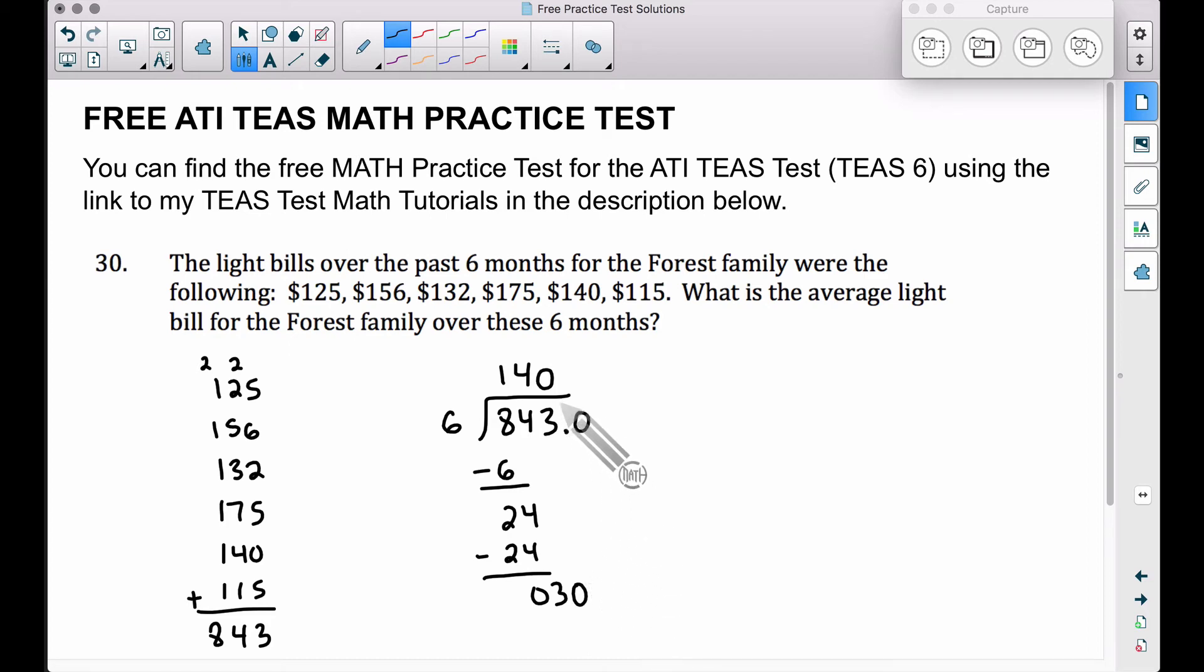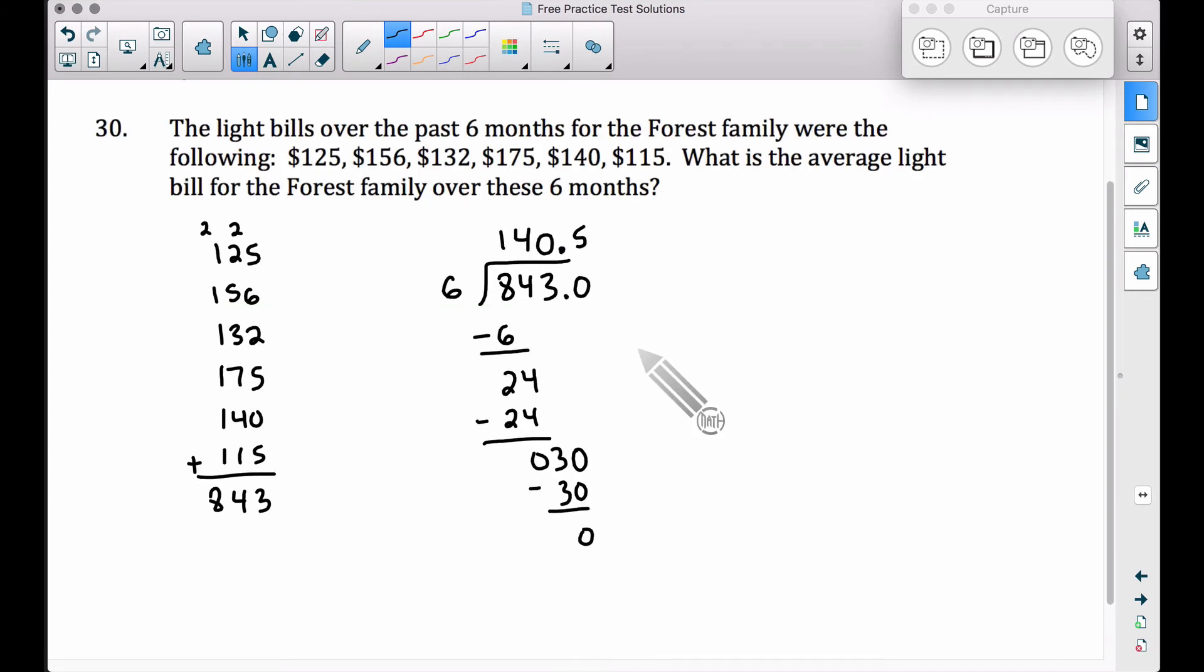And this is totally fine as long as we remember to put our decimal right up here too to match them up, to line them up. And six goes into 30 five times. Five times six is 30 with a remainder of zero.